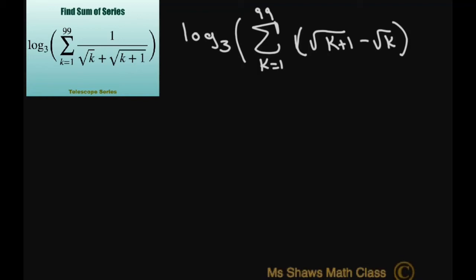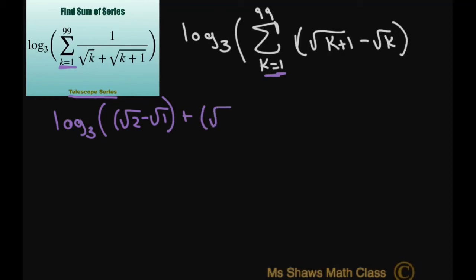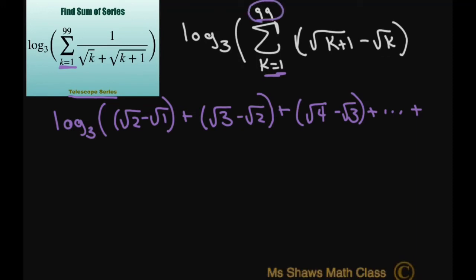Now we're starting at k equals 1, so let me write out some terms to see the pattern — this is a telescoping series. At k equals 1: square root of 2 minus square root of 1. At k equals 2: square root of 3 minus square root of 2. At k equals 3: square root of 4 minus square root of 3, plus dot dot dot, up to the last term at k equals 99: square root of 100 minus square root of 99.